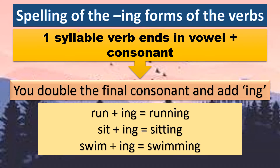Another spelling rule is for one-syllable verbs that end in vowel plus consonant. Vowels are A, E, I, O, U; consonants are B, C, D, F, G, H and so on — anything other than A, E, I, O, U. So if the verb ends in vowel and consonant, you double the consonant, then add -ing. For example, run — U is the vowel, N is the consonant, so you double the N: running. Sit — vowel I, consonant T, double the T: sitting.